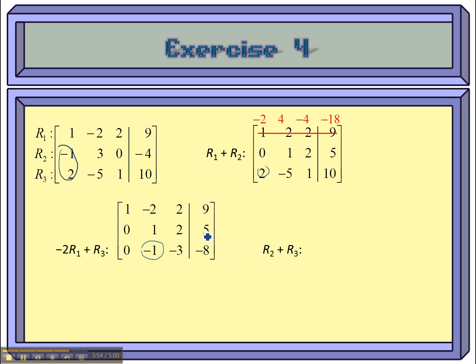So, row one stays the same. Row two stays the same. When I add up two and three together, one and negative one gives me a zero. Two and negative three gives me negative one. And five and negative eight gives me negative three.